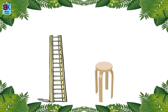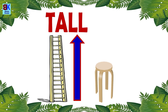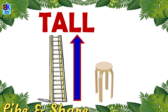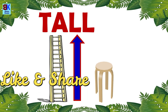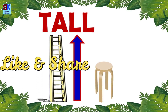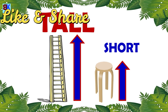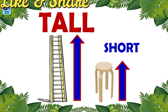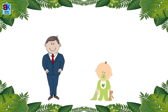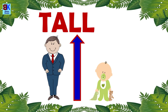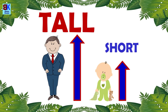A ladder is tall, whereas a stool is short. A man is tall. On the other hand, a baby is short.